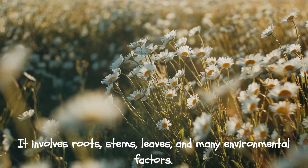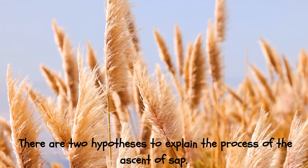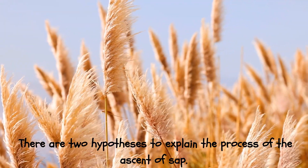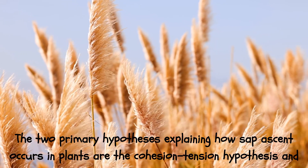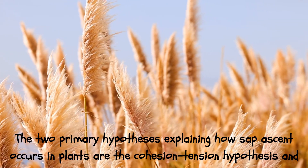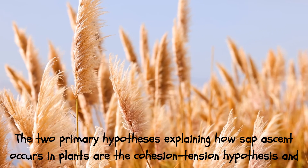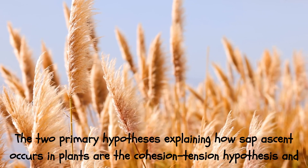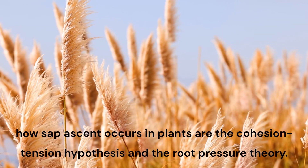There are two hypotheses to explain the process of the ascent of sap. The two primary hypotheses explaining how sap ascent occurs in plants are the cohesion tension hypothesis and the root pressure theory.